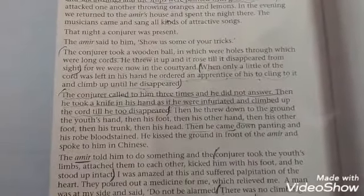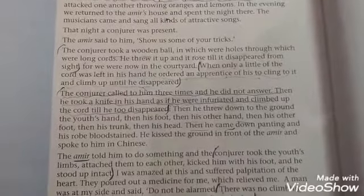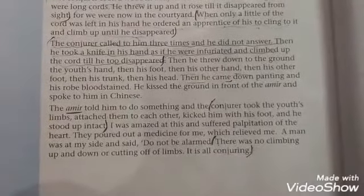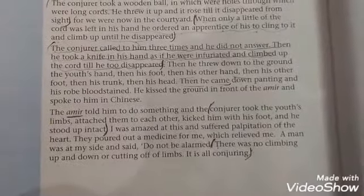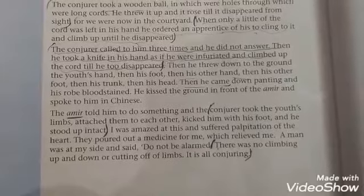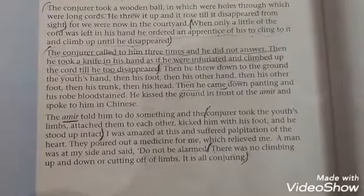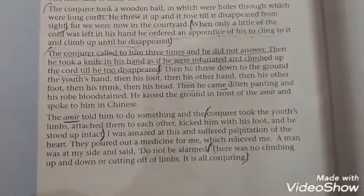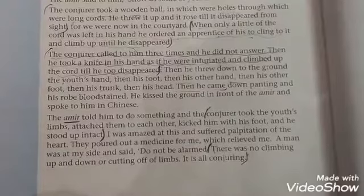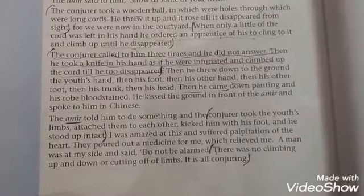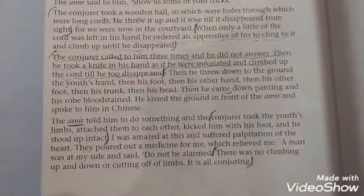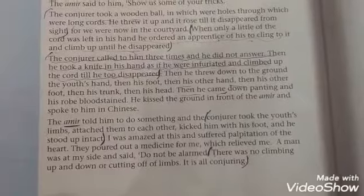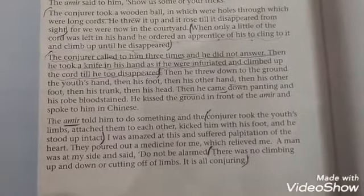With the help of this knife he cut the different parts of the body of the boy. Later, the conjurer took the huge limbs, attached them to each other, kicked him with his foot, and he stood up intact. A man at my side said, 'Don't be alarmed.'